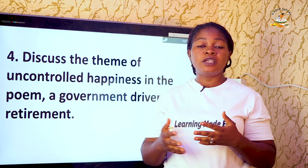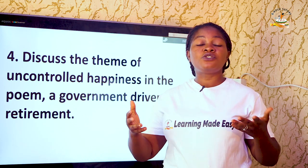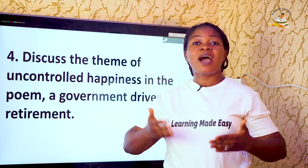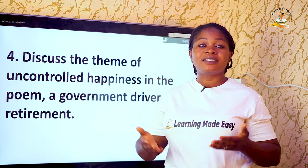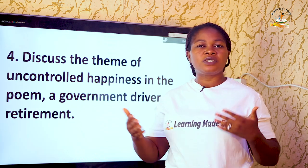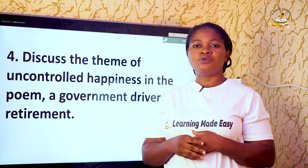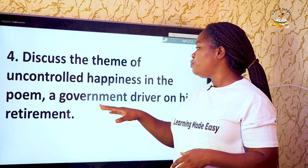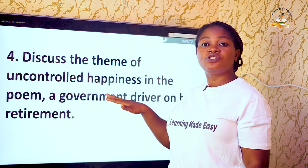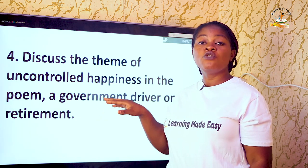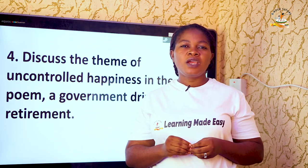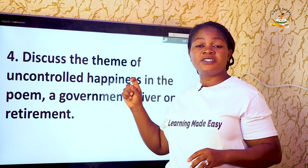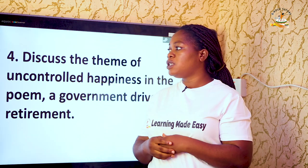The theme of uncontrolled happiness: many times we are so happy we cannot control ourselves. These young men who begin making money early drink and hype themselves, causing accidents on the road — all because they cannot control their happiness. If the government driver had controlled his level of happiness, he wouldn't have killed himself. Don't forget: don't drink and drive — that is emphasized with this poem.